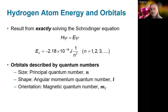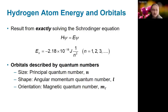In addition to the energy we also get the wave function, which is the mathematical function that describes the quantum system. Those orbitals are described by three different quantum numbers: the principal quantum number, which determines size and energy; the angular momentum quantum number l; and m sub l, which describes the orientation.